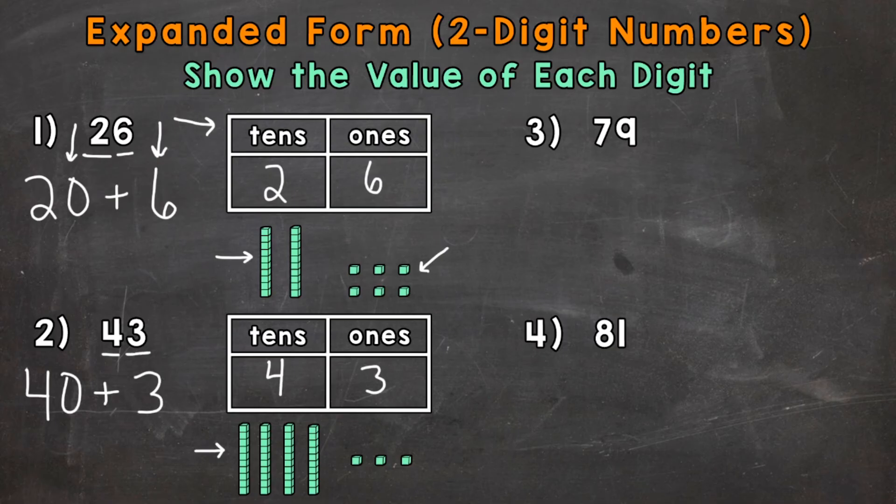On to number 3, where we have 79. So again, we always start with the greatest valued digit, or the digit furthest to the left. In the case of number 3, it's this 7. Now that 7 does not have a value of 7, because it's in the tens place. It represents seven groups of 10, which is 70.